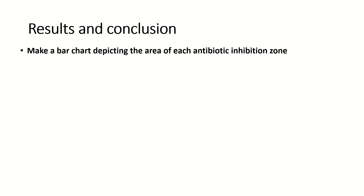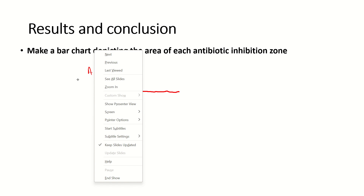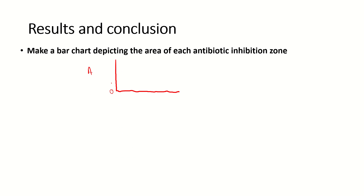Now to the results and conclusions. What you have to do first is make a bar chart depicting the area of each antibiotic inhibition zone. You have the area on the y-axis and list your different antibiotics — antibiotic one, antibiotic two, antibiotic three — and you would just do a simple bar chart.